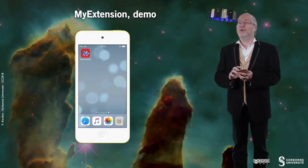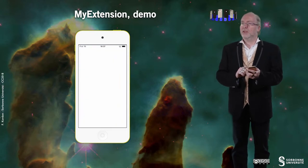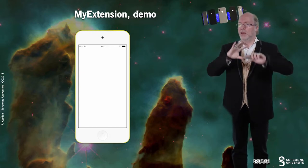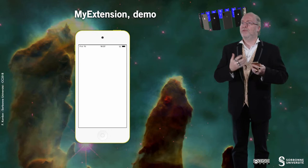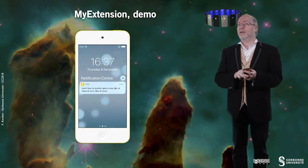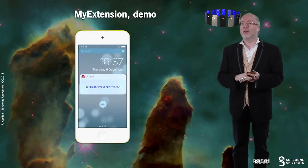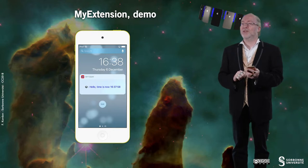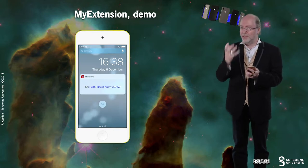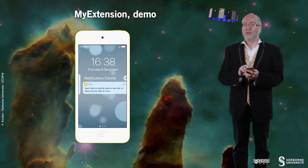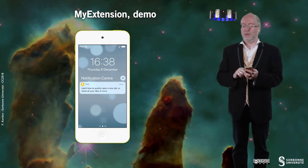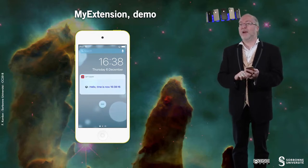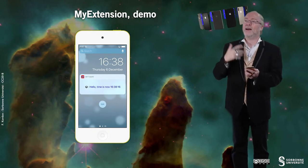Let's have a look at my application. The application really provides me nothing because this is a blank application which is just here for its extension. And if I invoke the notification center and have a look here, here is the code associated to this application — it's just in the extension. And if I drop the Today extension and add another look at it, you see that the date has changed, because the extension has refreshed the view.